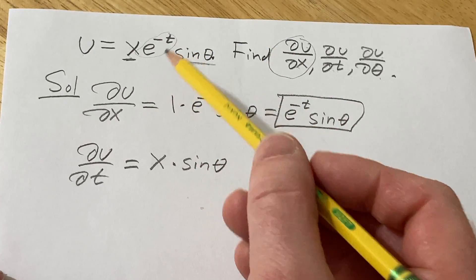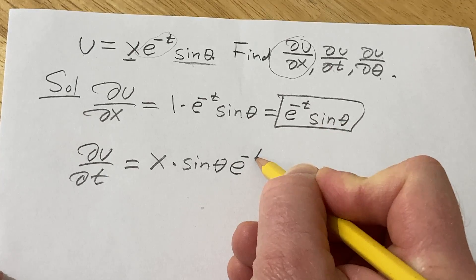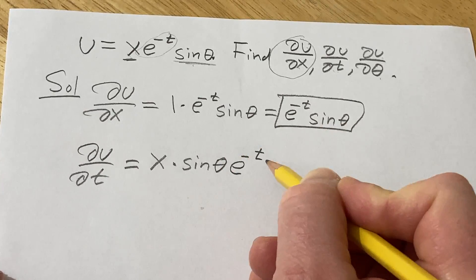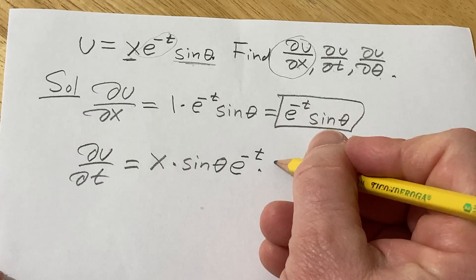So here it's e^(-t). So we have to use the chain rule. So it'll be e^(-t). That's the derivative of the outside function. We leave the inside untouched times the derivative of the inside. The derivative of negative t is negative 1.